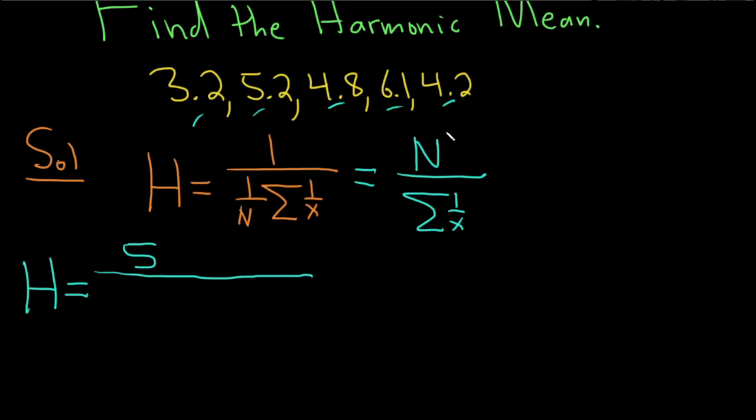And on the bottom, we simply add up the sum of the reciprocals. So the reciprocal of 3.2 is 1 over 3.2. And then, remember, it's like 3.2 over 1. So that's how you find the reciprocal. You flip the number.